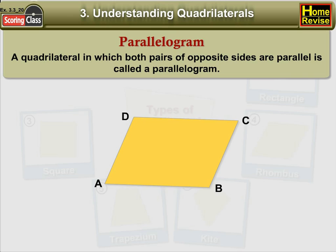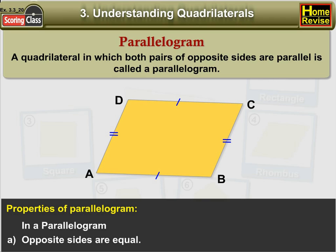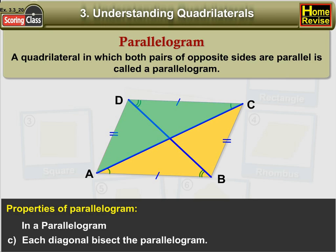Therefore ABCD is a parallelogram. Now let us see properties of parallelogram. In a parallelogram: A. Opposite sides are equal. B. Opposite angles are equal. C. Each diagonal bisects the parallelogram.